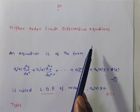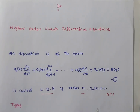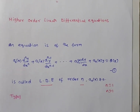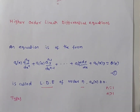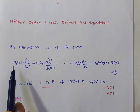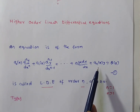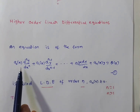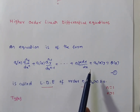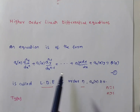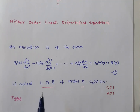Now we are discussing higher-order equations, where n > 1. These are of different types. Here a₀(x), a₁(x), …, aₙ(x) are the coefficients. If all of these are constants, then it is called a linear differential equation with constant coefficients.